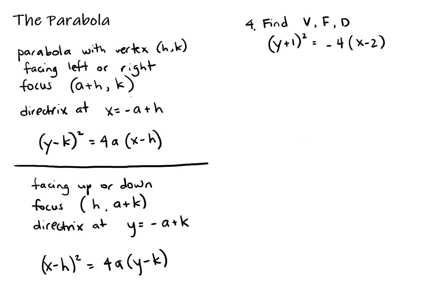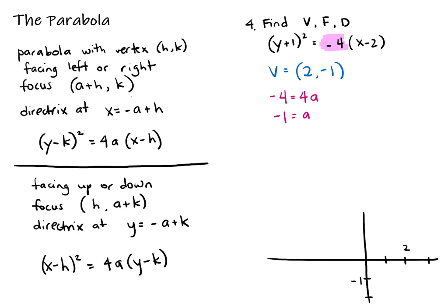Question 4 asks us to find the vertex, focus, and directrix of a given equation. The vertex comes from the h and k modifications — vertex is at (2, -1). Remember we always go in the opposite direction of the sign for h and k. To find the a-value, set the coefficient equal to 4a, giving a = -1. Looking at the equation, it has (y + 1)², so it's a y-squared graph, meaning it faces left or right. Since a solved to be negative 1, the parabola faces left.